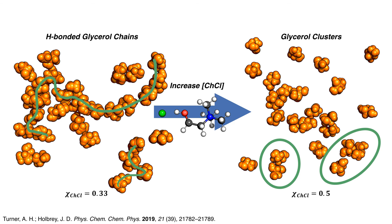The persistent nature of the glycerol hydrogen bond network within the greater system-wide network points towards how these liquids form a deep eutectic solvent. At the eutectic point, choline chloride is present in sufficient quantities to disrupt the packing and hydrogen bond network of glycerol, but at higher salt concentrations, discrete domains are formed.